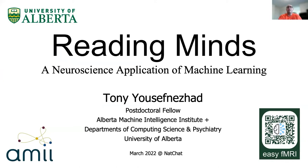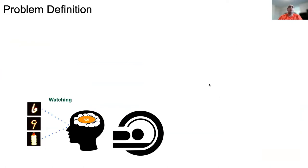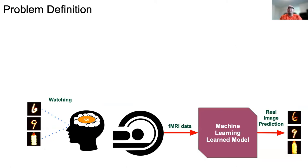So, what does 'reading minds' mean in my world? We have different subjects — I prefer not to say patients, because most of the people I'm working with are healthy people — and we just gather these healthy people's neural activity while they're watching different visual stimuli. And we want to use machine learning to reconstruct the actual image based on their neural activity.